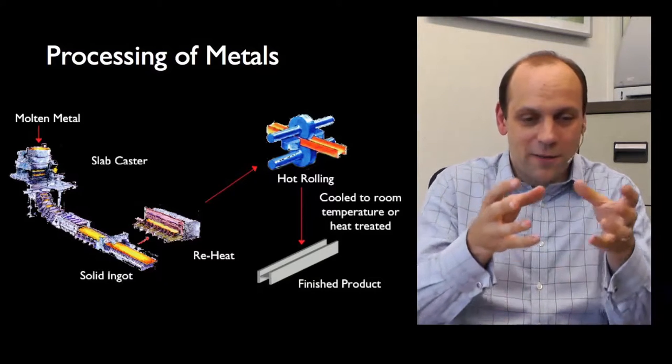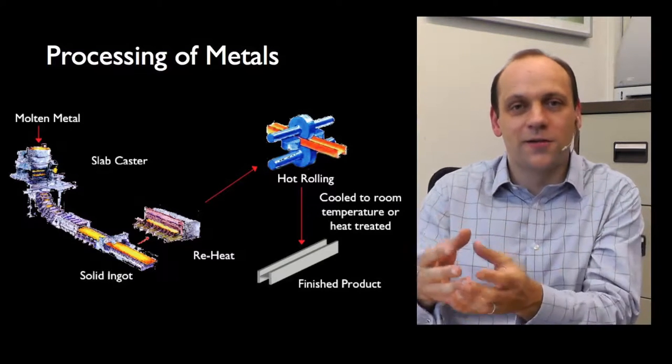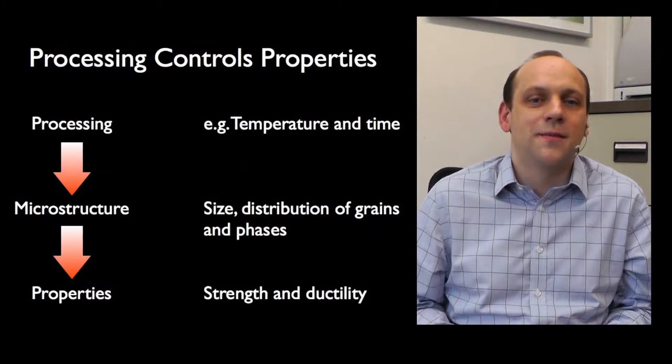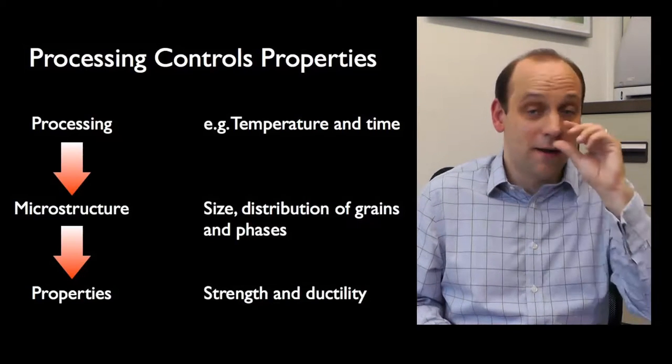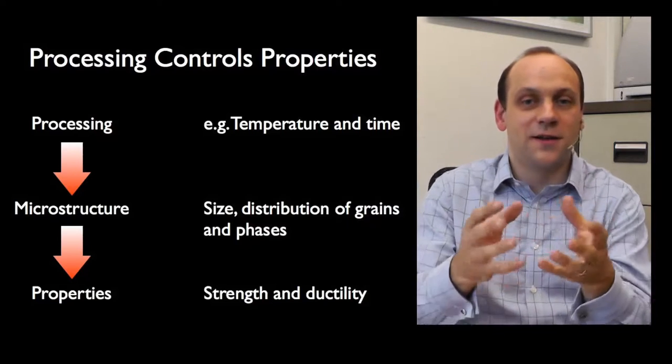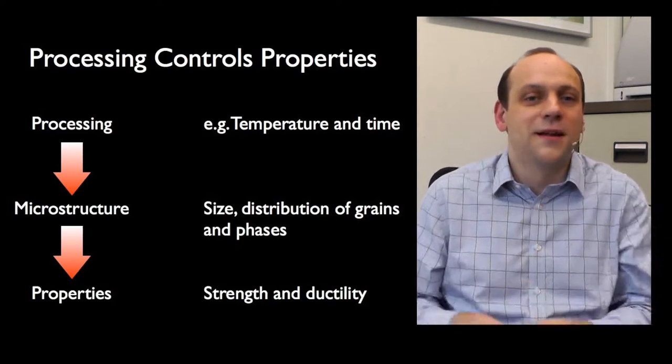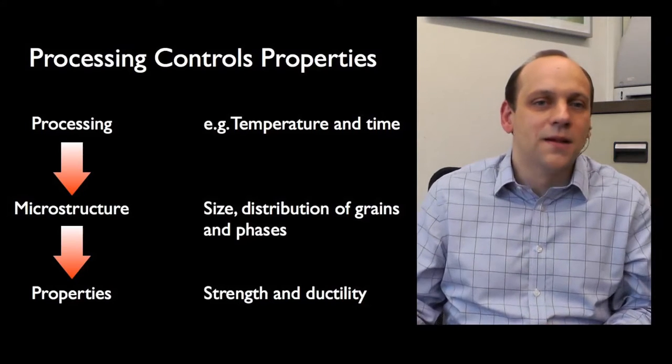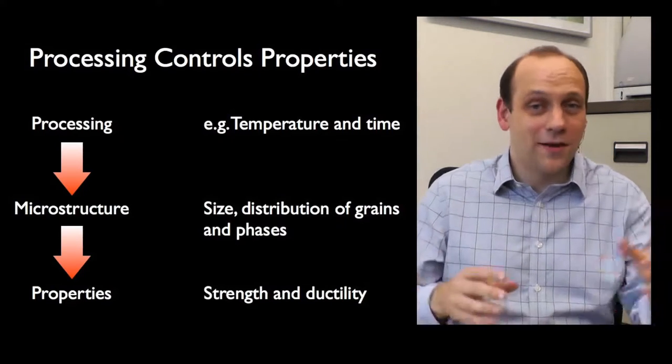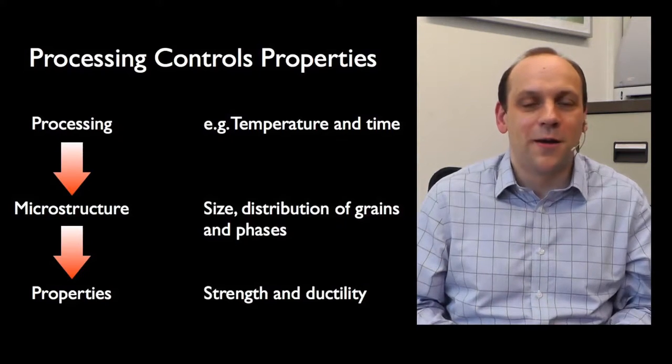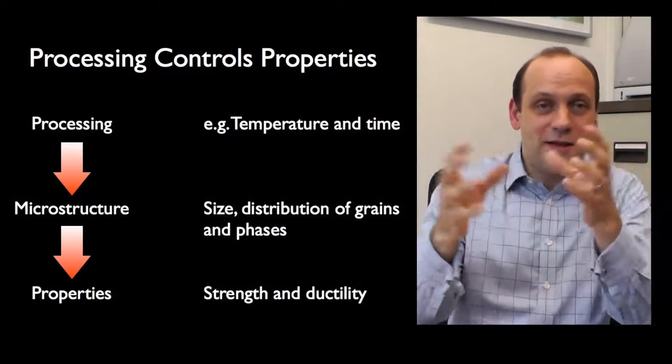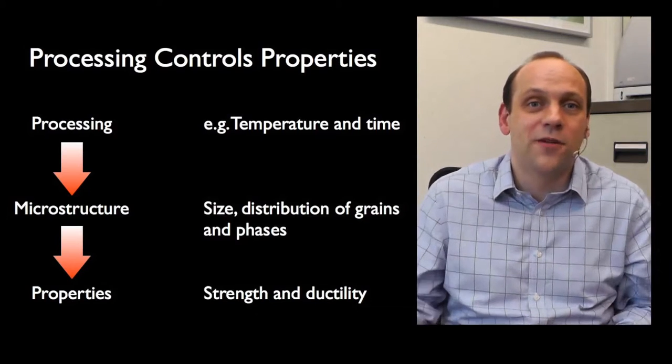We're studying how processing can control microstructure and properties. Processing things like temperature and time control the microstructure—the size and distribution of grains and phases—and that controls properties like strength and ductility. That means we need to know what phases are present at different temperatures during processing.